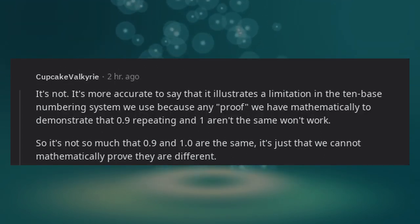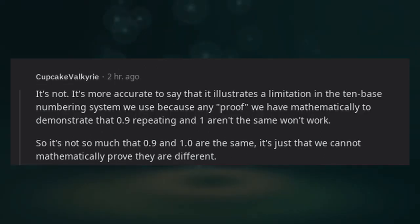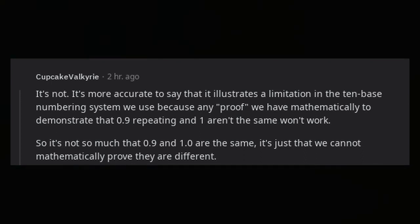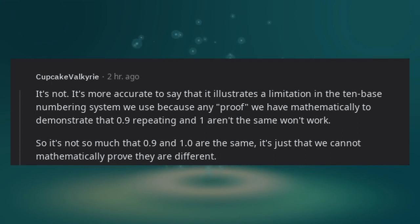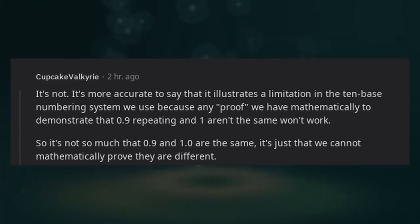It's not. It's more accurate to say that it illustrates a limitation in the 10 base numbering system we use. Because any proof we have mathematically to demonstrate that 0.9 repeating and 1 aren't the same won't work. So it's not so much that 0.9 and 1.0 are the same—it's just that we cannot mathematically prove they are different.